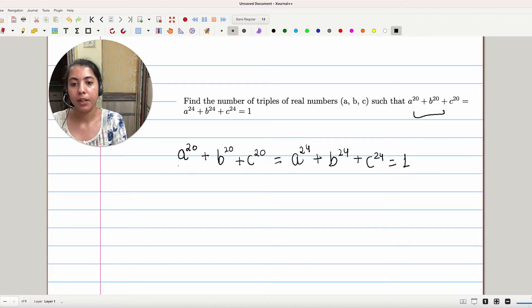One thing we can observe here is all the powers of a, b, c are even. That symbolizes that whatever is the value of a, b, c, their sign will always be positive. So this is some positive number, this is also some positive number, and they add up to 1. And also since they add up to 1, their value must lie between minus 1 and 1.